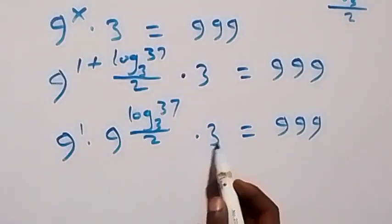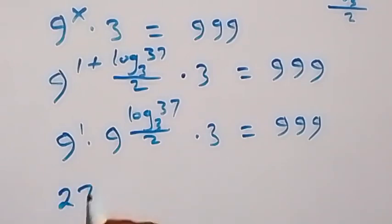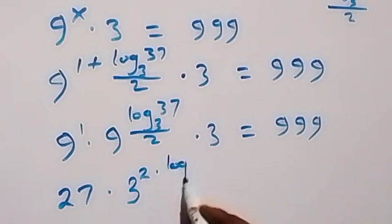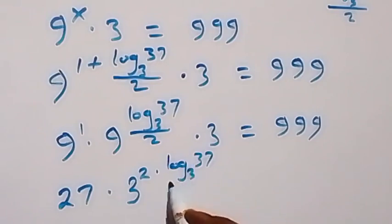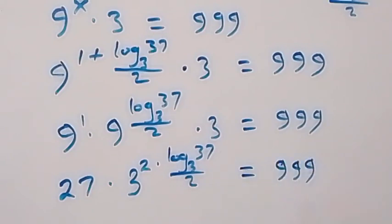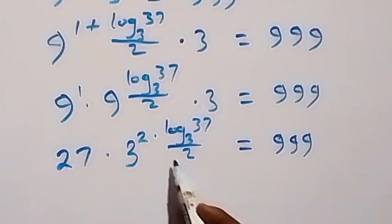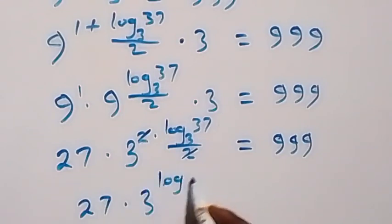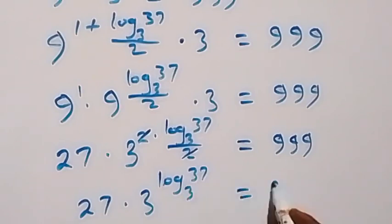Multiplying 9 and 3 gives 27. We rewrite 9 as 3 squared: 3² raised to power log₃(37) over 2. The 2's cancel out, giving 27 times 3 raised to power log₃(37) equals 9.99.